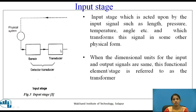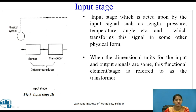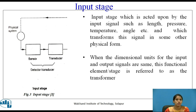In the input stage, the sensor senses the physical system and gives the signal to the transducer. The transducer converts one form of signal into another. Together they are known as the detector-transducer stage. The input stage is acted upon by input signals such as length, pressure, temperature, angle, etc., and transforms the signal into some other physical form. When the dimensional units of input and output signals are the same, this functional element is referred to as a transformer.